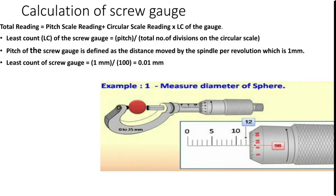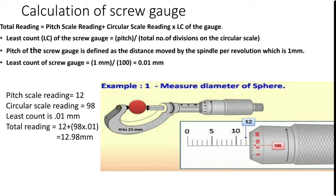This is a sample question — we will see what is the diameter of this sphere. Here pitch scale reading is equal to 12. Circular scale reading is 98, as you can see here, and least count is 0.01 mm. So total reading equals 12 plus 98 × 0.01, which is equal to 12.98 mm. The diameter of this sphere is 12.98 mm.